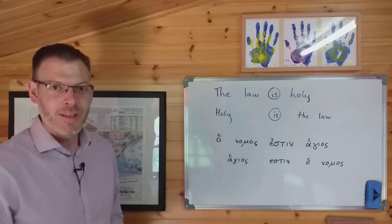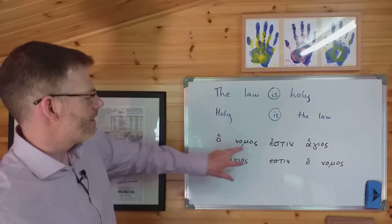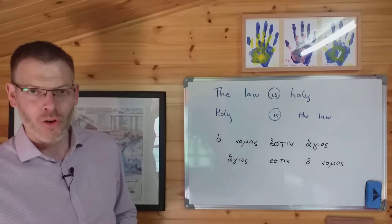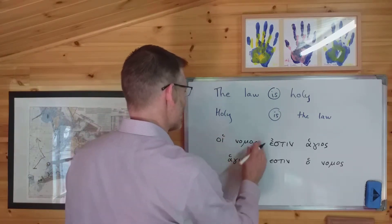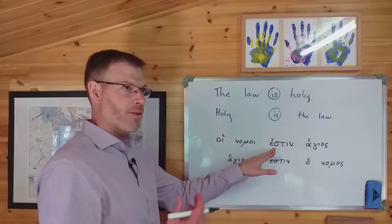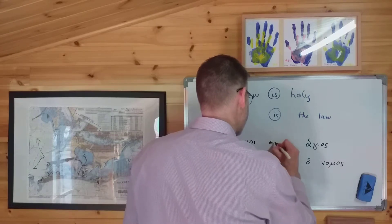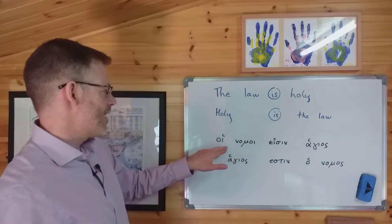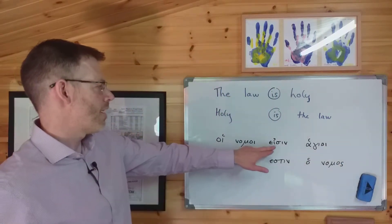Notice that ho nomos is still the subject, even though the order of the words has been reversed. Now, once we've got this in place, you can start to see how we would tweak this sentence if, let's say, we had more than one law. Let's imagine that we were saying there were two or three or four laws, or all the laws of the Old Testament. We wanted to say hoi nomoi. Well, the laws are, so third-person plural, eimi, eisin. And what do we have to do to this? Well, it can't be sitting in the singular. When this is in the plural, it's hagioi. The laws are holy.